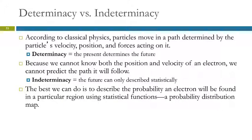So classical physics says that particles move in a path that's determined by their velocity, their position, and the forces acting on the particle. And this is what makes sense to us. This is called determinacy. The present determines the future. Because we can't know the position and the velocity of an electron at the same time, we cannot predict what path it will follow. Indeterminacy. The future can only be described statistically. We can't predict it based on present situation. So the best we can do is describe the probability that an electron will be found in a particular area using statistical functions.